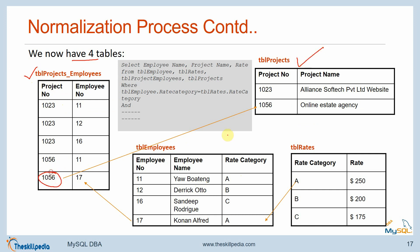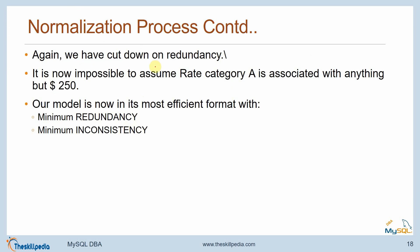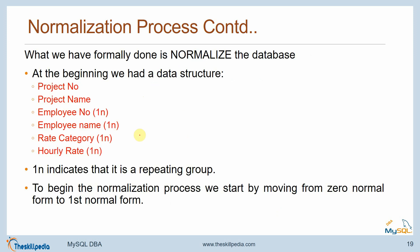As before, we remove the redundant data and place it into a separate table. We create a new table called 'Rates' with fields rate category and hourly rate, then delete hourly rate from the Employees table. We now have four tables: Project_Employees, Projects, Employees, and Rates. A sample query to fetch combined data would be something like: SELECT employee_name, project_name, rate FROM employee_table, rate_table, project_employees_table, project_table with join conditions. Again we have cut down on redundancy — it is impossible to associate rate category A with anything but $250. Our model is now in the most efficient format with minimum redundancy and minimum inconsistency.